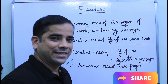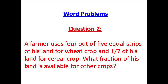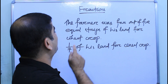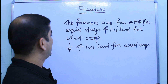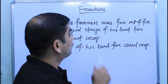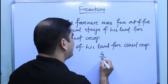The second question: a farmer uses four out of five equal strips of his land for wheat crop and one-seventh of his land for cereal crop. What fraction of his land is available for other crops? As per the question, the farmer uses four out of five — that is four-fifths — of his land for wheat crop, and one-seventh of his land for cereal crop.